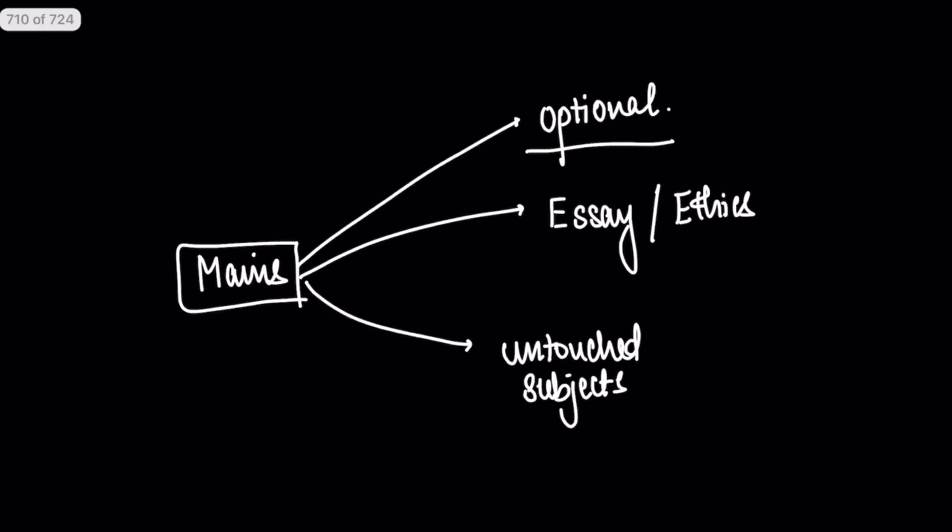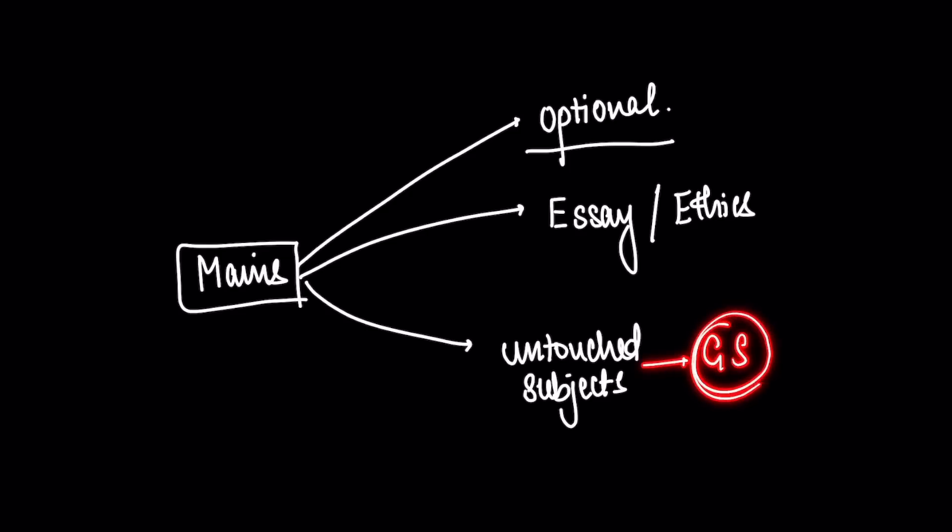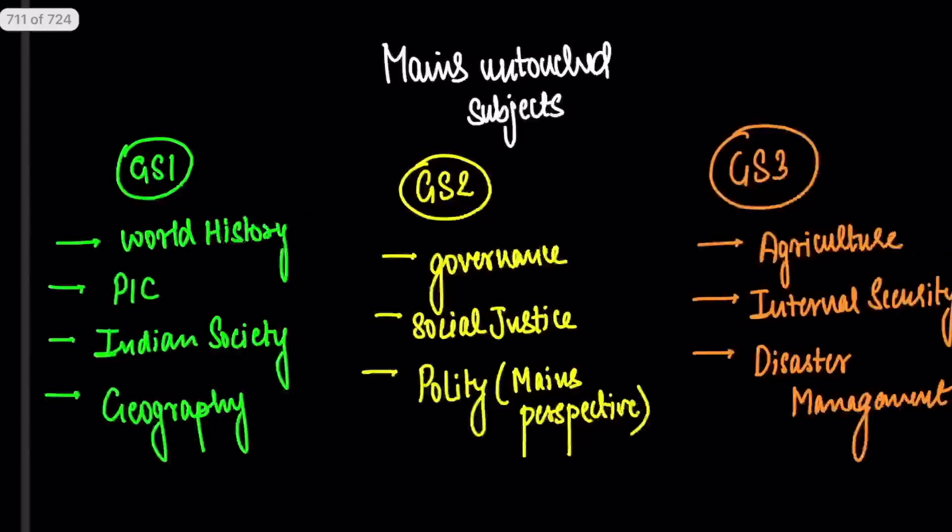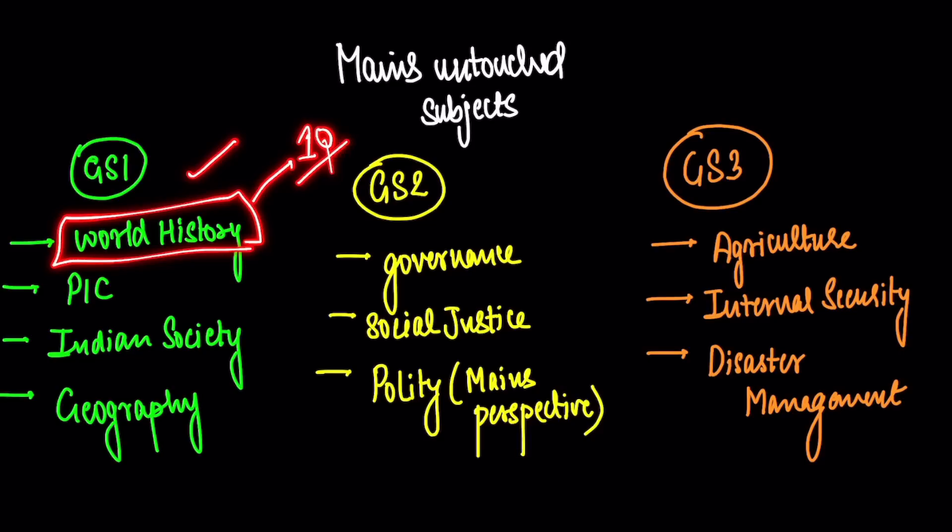Why? I'll tell you. In mains there are three things that you will not be ready with. Most likely, if you have given prelims this year, you will not be ready with your optional. You will not be completely ready with essay and ethics. And there will be some untouched subjects - these come in GS, which we never study and we forget that they actually come in mains. Let's take a look at these subjects. In GS1, there's world history. Are you confident about this subject? Okay, one question comes, I agree. But even if one question comes, you cannot go to mains without studying it. Post-independence - okay, one question comes, but we have to study for that one question. Indian society - at least 50 to 60 marks in the mains. We haven't studied this subject yet.